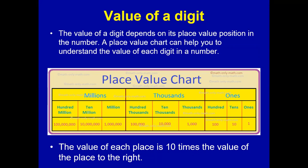Then comes the thousands period, which is made up of thousands, ten thousands, and hundred thousands. Next comes the millions period, which is made up of one million, ten million, and hundred million. Each period in a number is separated by a comma — after the first three digits you put a comma, then the next three digits, and another comma, then the next three digits.